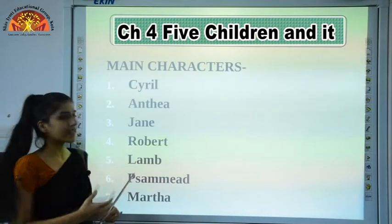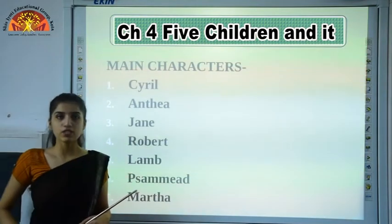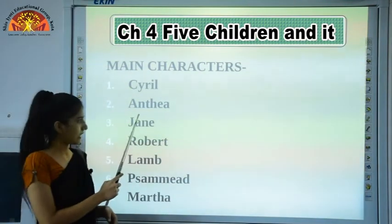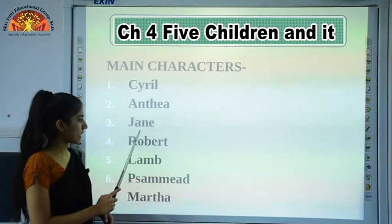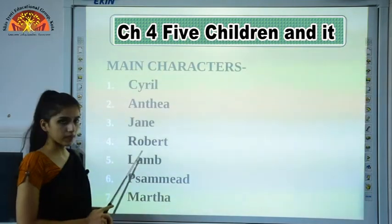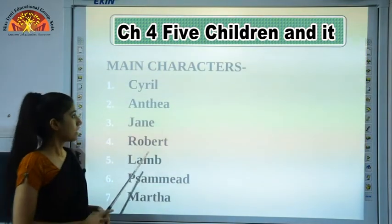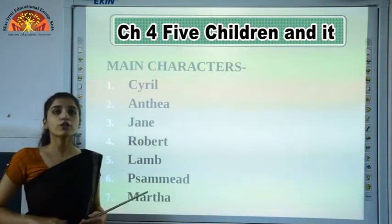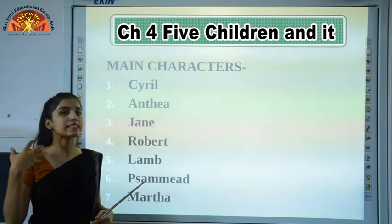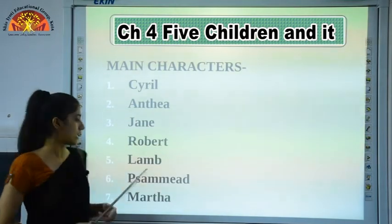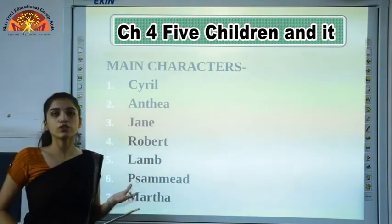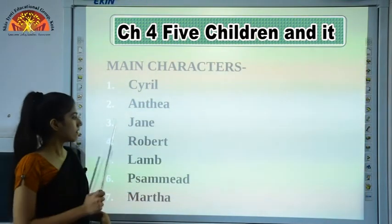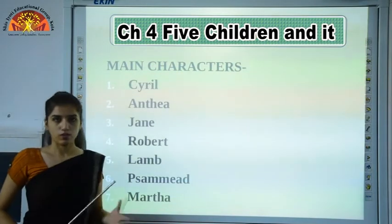Let's see the main characters of this chapter first. So the five children are Cyril, Enthya, Jane, Robert, and Lam. These are the five children with whom the incident happened. Then there is Simeet, the strange creature, and Martha, their cook.